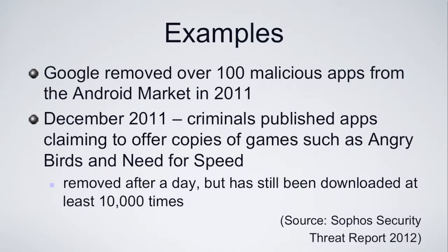According to Sophos, from their threat report earlier this year: Google removed over 100 malicious apps from what was then the Android market back in 2011. December of last year, criminals published apps that claimed to offer copies of games such as Angry Birds and Need for Speed. They were removed fairly quickly when it became apparent that it was malware code, but nonetheless they were downloaded around 10,000 times before that happened, showing the potential to reach a vulnerable audience.